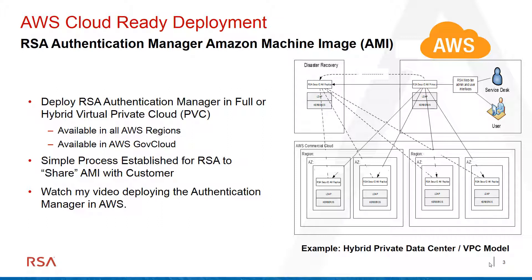Deploying in AWS allows you to reduce your capital expenses. You don't need to worry about buying additional software, servers, switches, power, and cooling for a data center. A lot of customers have a primary on-premises deployment with replicas in AWS. Some go fully cloud, making everything an operational expense — like a predictable monthly cell phone bill. Administrators like it too because they don't have to put in bids for servers; Amazon handles all of that.